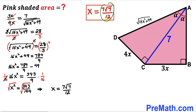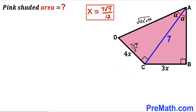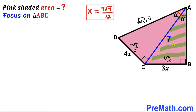Now we are going to substitute this x value: CD = 4 × (7√7/12) which simplifies to 7√7/3. Likewise, we substitute x for BC: 3 × (7√7/12) which gives us 7√7/4.